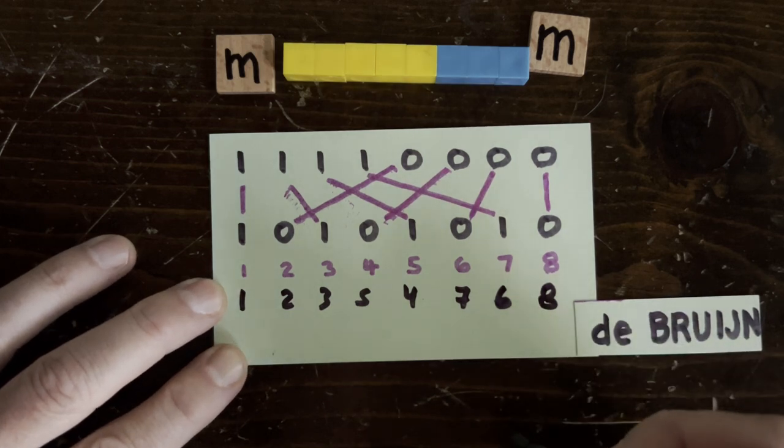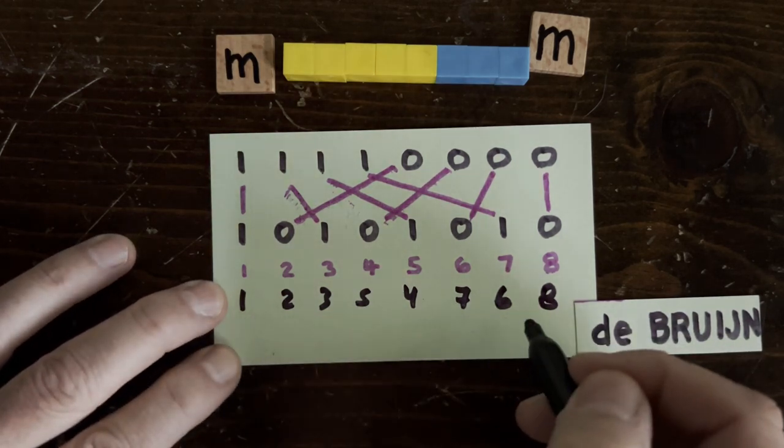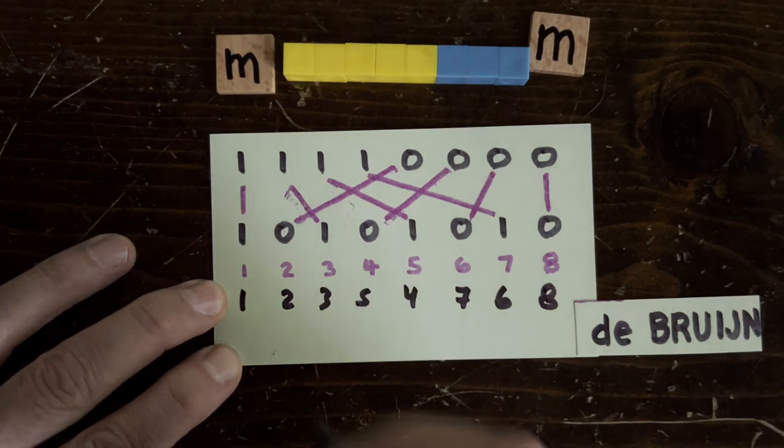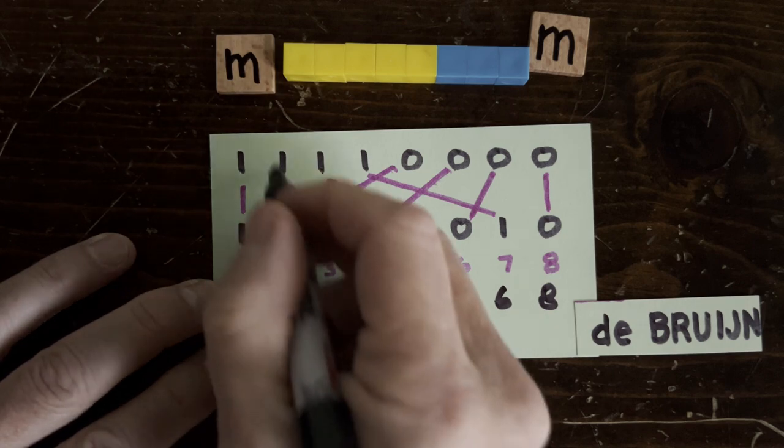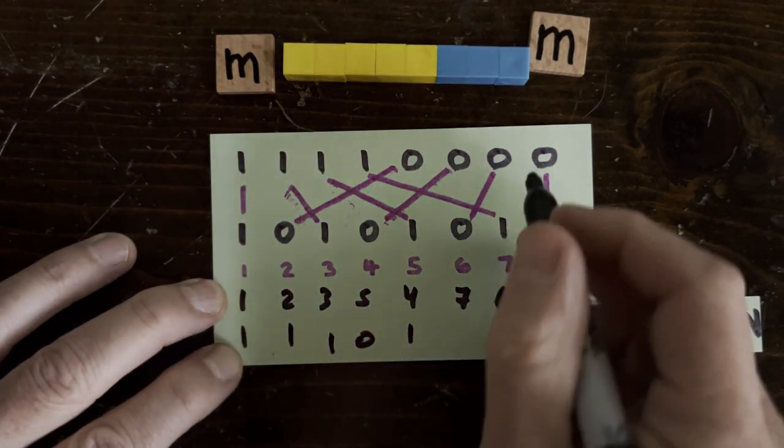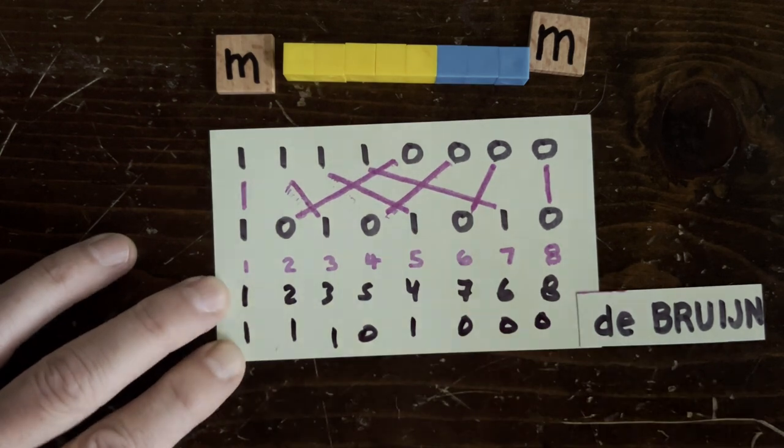Okay, so now we've got some permuted indices, which we use to read off the 0s and 1s from the top sequence. And we get 1-1-1-0-1-0-0-0, a de Bruijn sequence. That's pretty easy.